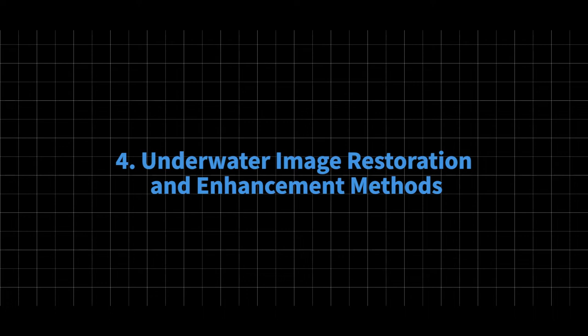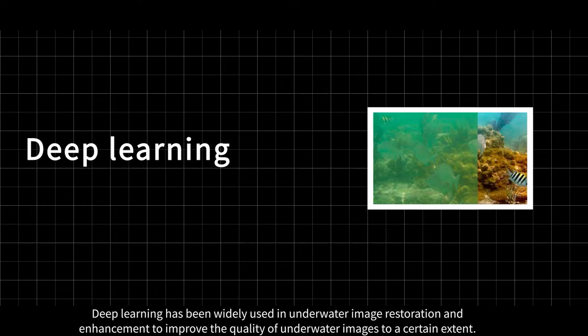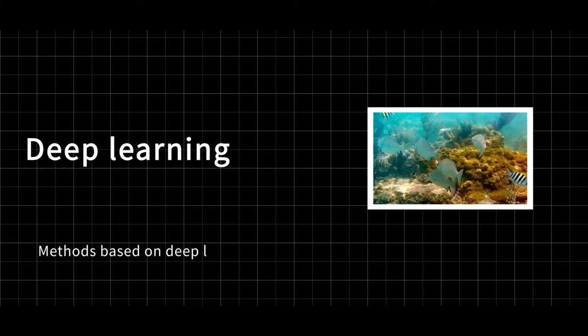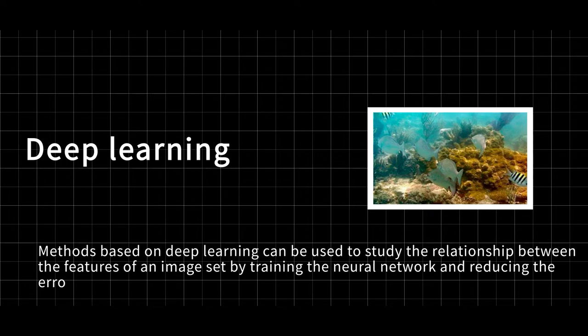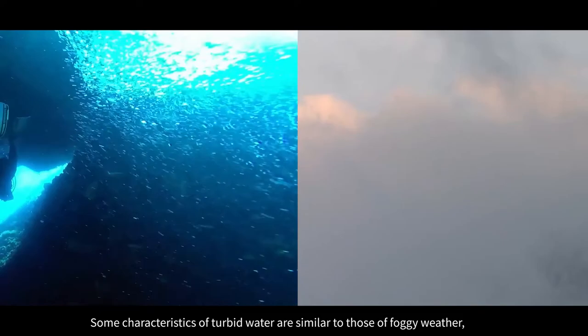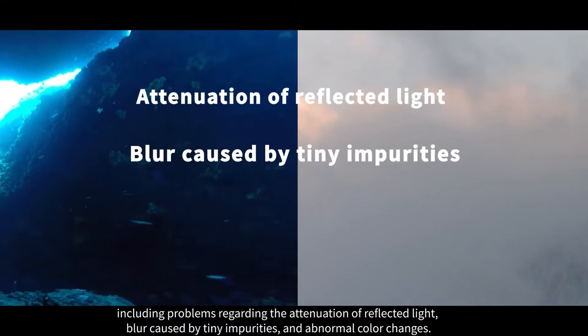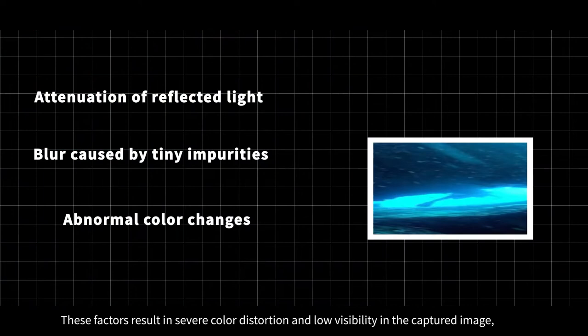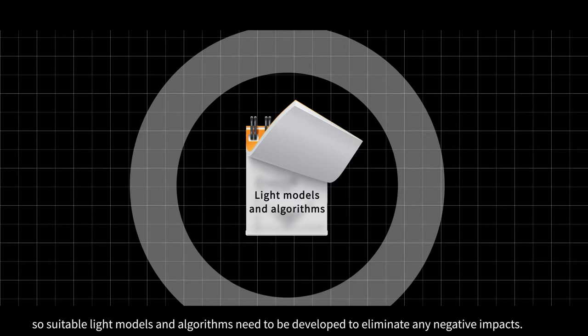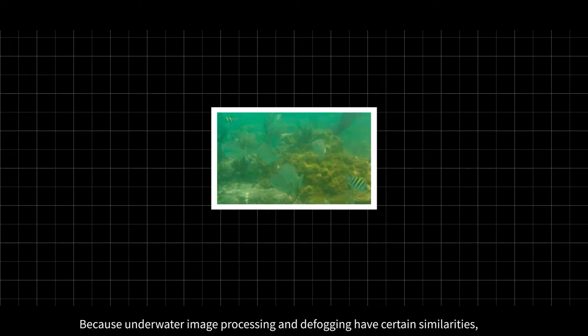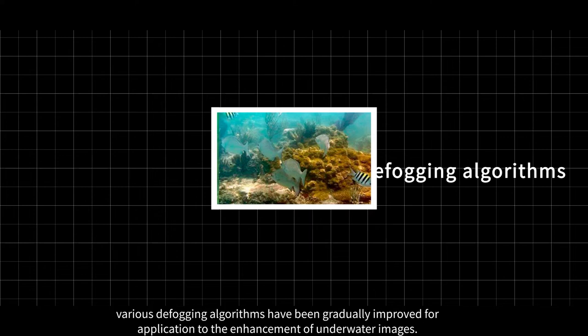Deep learning has been widely used in underwater image restoration and enhancement to improve the quality of underwater images to a certain extent. Methods based on deep learning can study the relationship between features of an image set by training the neural network and reducing the error caused by prior invalidity. Some characteristics of turbid water are similar to those of foggy weather, including problems regarding the attenuation of reflected light, blur caused by tiny impurities, and abnormal color changes. These factors result in severe color distortion and low visibility in the captured image, so suitable light models and algorithms need to be developed to eliminate any negative impacts. Because underwater image processing and defogging have certain similarities, various defogging algorithms have been gradually improved for application to the enhancement of underwater images.